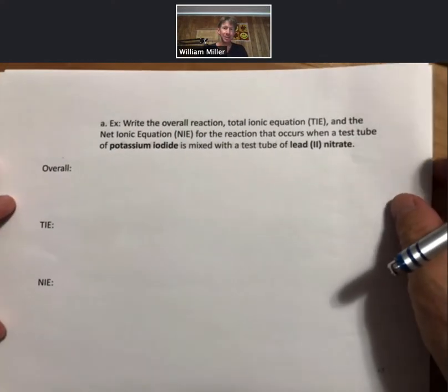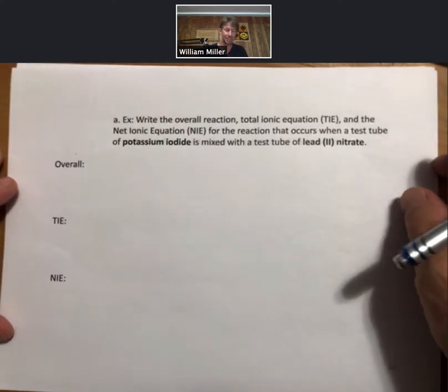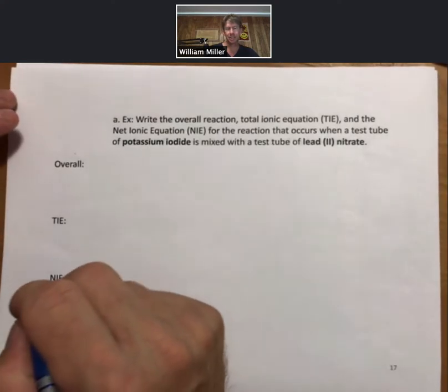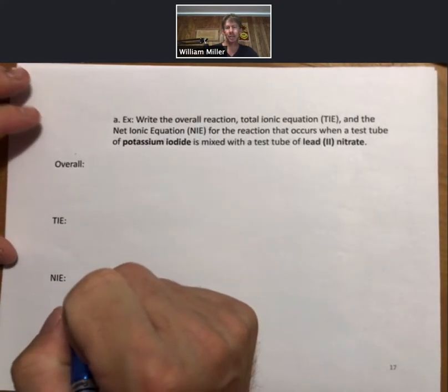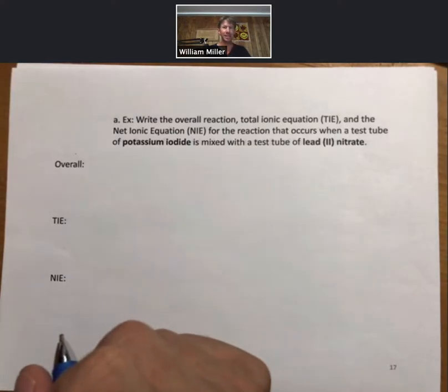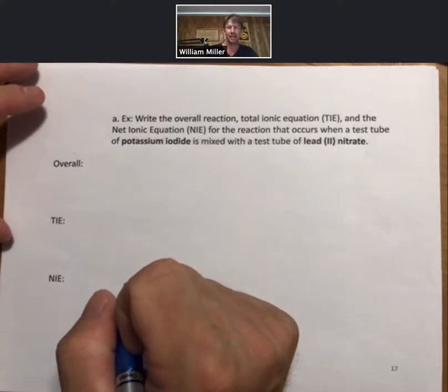So a precipitate forms. That's our experimental evidence. That precipitate is yellow in this case. And to analyze this process, we're going to go through writing the overall reaction, the total ionic equation, or the TIE, and the net ionic equation, or the NIE.